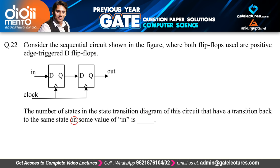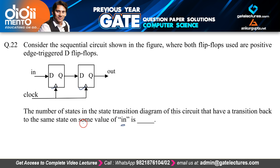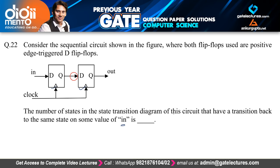The next question is from digital logic using D flip-flops. The question says: consider the sequencer circuit where both flip-flops are positive edge-triggered D flip-flops. We need to find the number of states in the state transition diagram that have a transition back to the same state on some value of input.